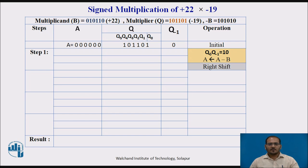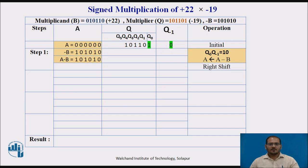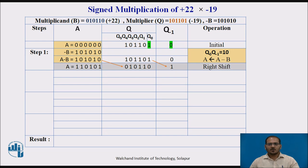Initialize: A is 000000, Q is 101101, Q-1 is 0. In step 1, Q0 and Q-1 are 1-0, so the operation is A minus B and right shift. B's value is 101010. Perform A minus B. Then perform the right shift of A, Q, and Q-1 by 1 bit to the right. The leftmost bit is 1, indicating the sign — keep it as-is to maintain the sign. Q-register becomes 010110, Q-1 becomes 1.